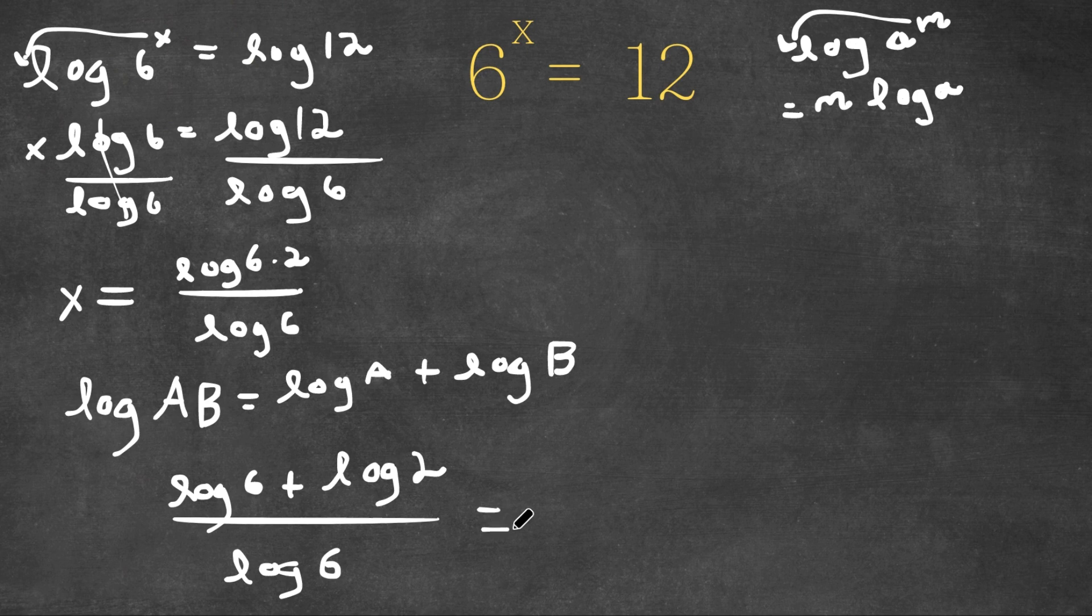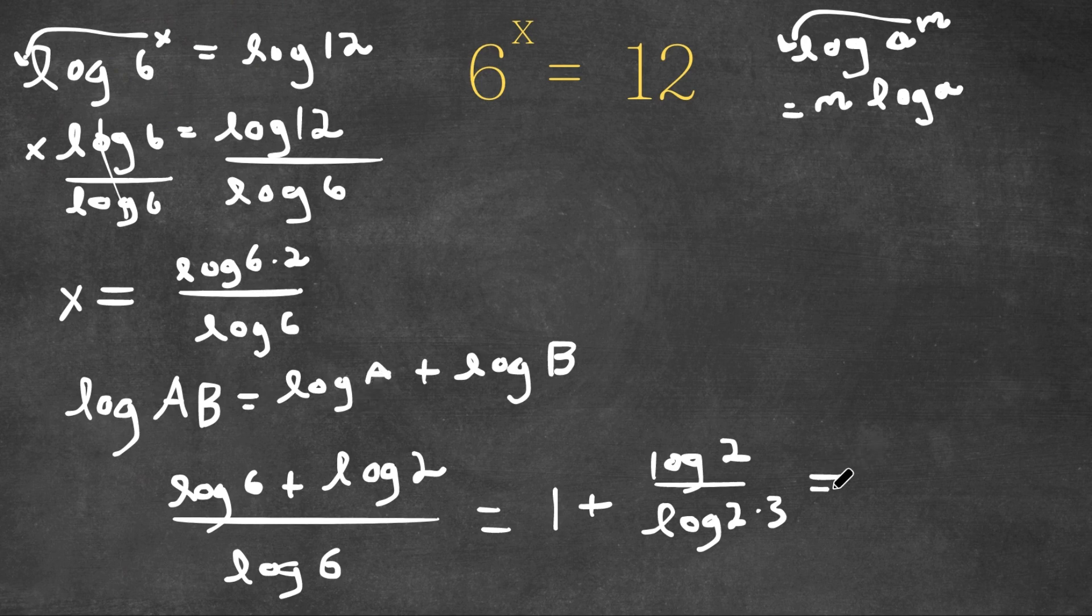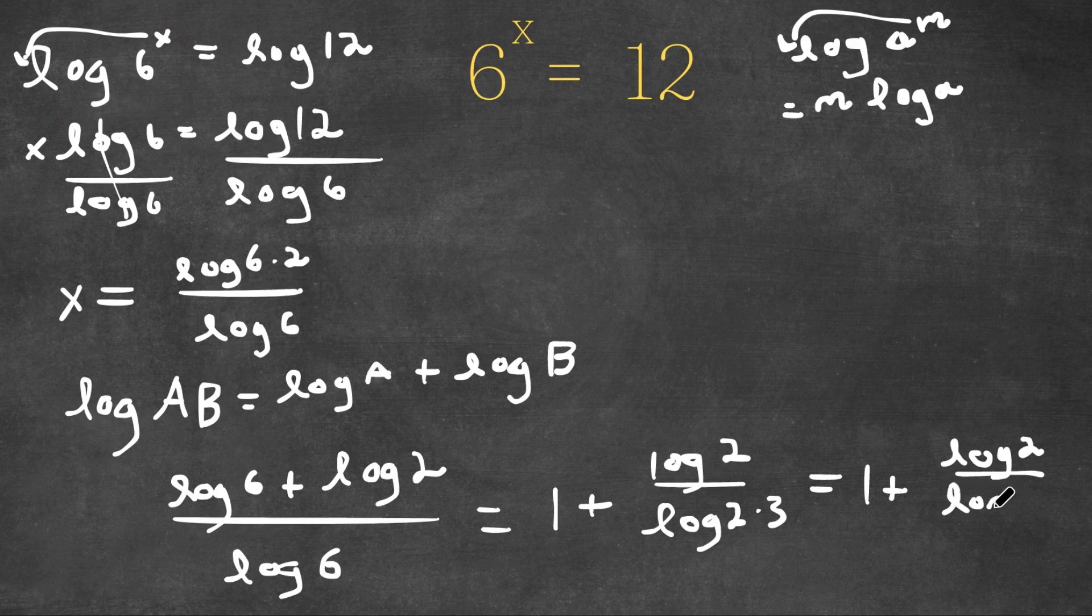So now log 6 divided by log 6 is 1 plus log 2 divided by log 6. Now remember log 6 can be rewritten as log 2 times 3. And remember log of ab is equal to log a plus log b. So this is going to equal 1 plus log 2 over log 2 plus log 3.